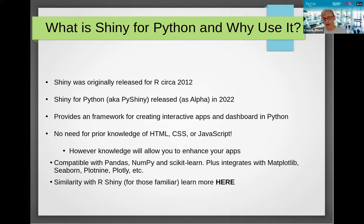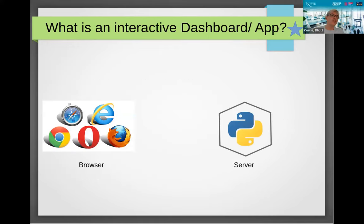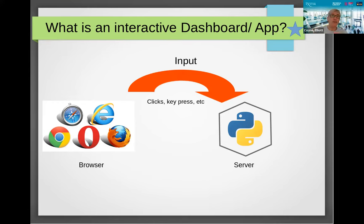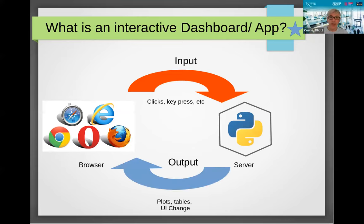Just to make sure everyone understands what an interactive app or dashboard is: we have a web browser, and then a server with Python running on it. When you perform an action in the web browser — that's known as an input — it can comprise of clicks, key presses, moving a slider. That is fed into the server, which then does something and spits out an output. That output could be a plot, a graph, a table, a change in visualization, or text on the screen.